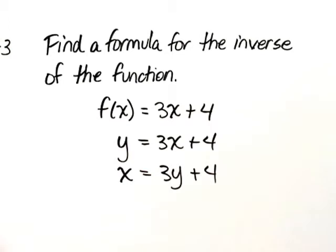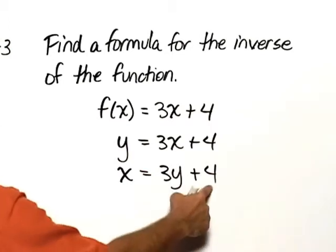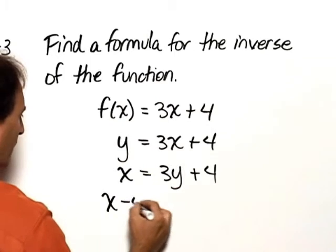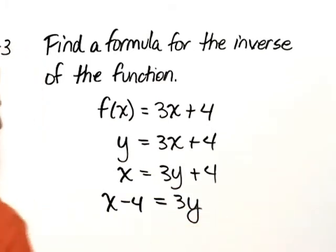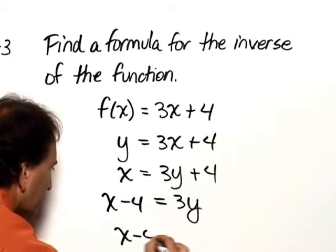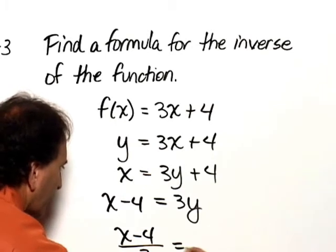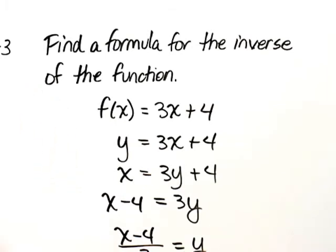Next, we solve for y. That would involve subtracting 4 from both sides, so x minus 4 equals 3y, and now divide both sides by 3, so we get x minus 4 divided by 3 is equal to y.